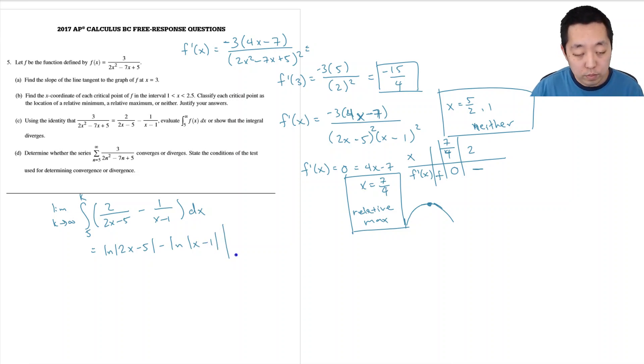And I'm going to evaluate from 5 to k. Let's simplify this a little bit. This is a ln. Because when I subtract two natural logs, I can divide. Right? That's my property of log. So I'm going to plug in k. So I have ln of 2k minus 5 over k minus 1 minus ln absolute value of 5 over 4. Now I want to compute the limit. I want to evaluate the limit as k goes to infinity of this whole thing.